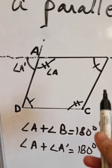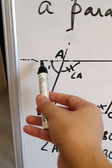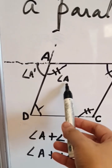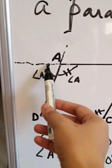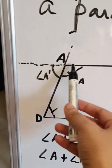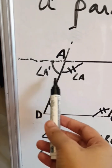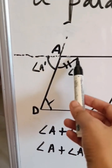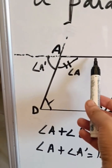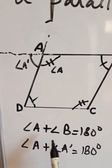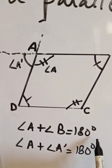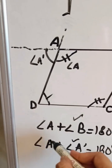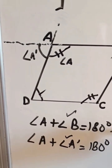Next, in this quadrilateral if we extend the line BA towards the left, and this angle is angle A, we treat the supplementary angle as angle A dash. This is a straight line, so the sum of angle A plus angle A dash equals 180 degrees because they form a linear pair. We have also proven that angle A plus angle B equals 180 degrees. That means angle B equals angle A dash, as angle A is common in both statements.